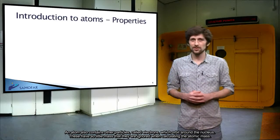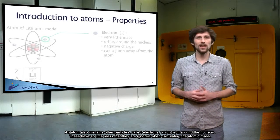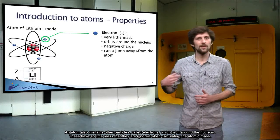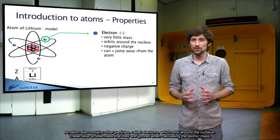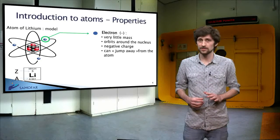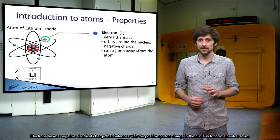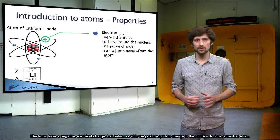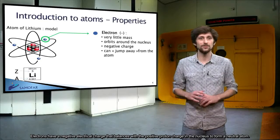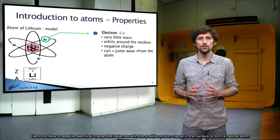An atom also contains other particles, called electrons, which orbit around the nucleus. These have so little mass that they are ignored when calculating their atomic mass. Electrons have a negative electrical charge that balances with a positive proton charge in the nucleus to form a neutral atom.